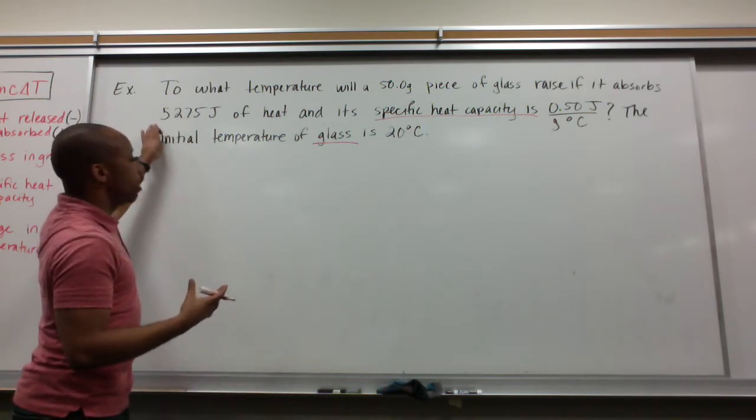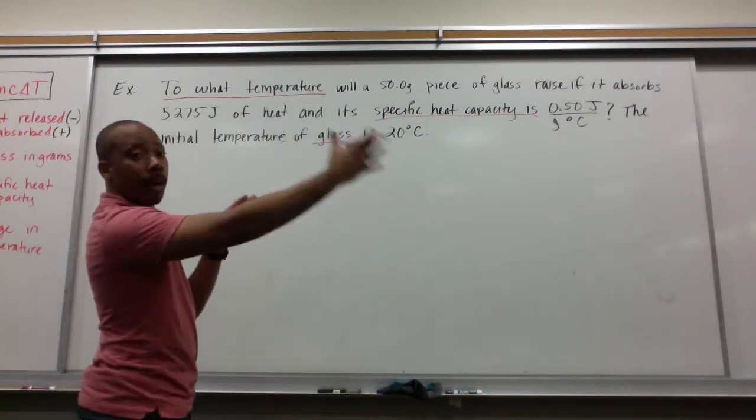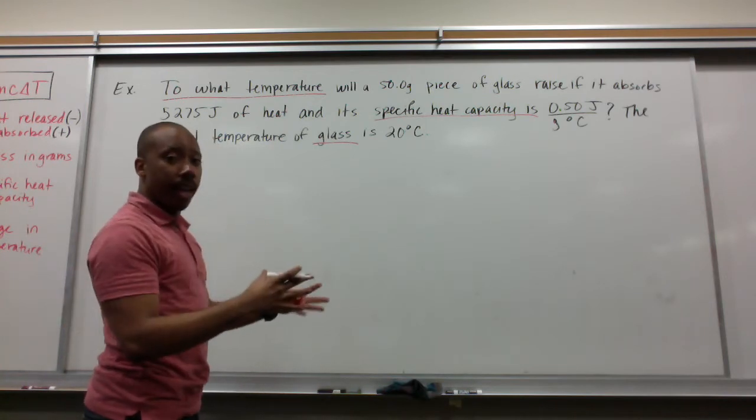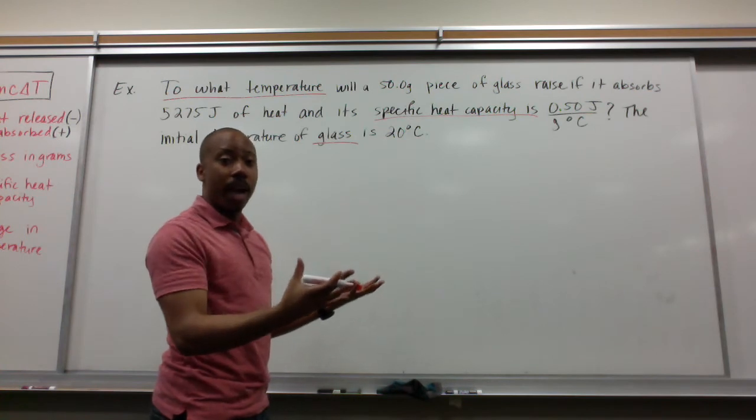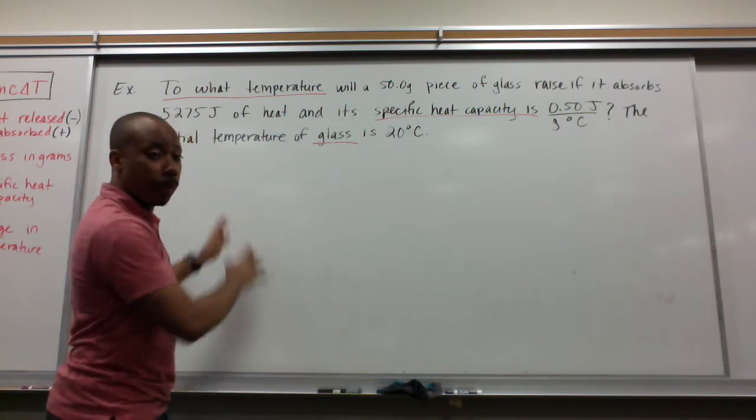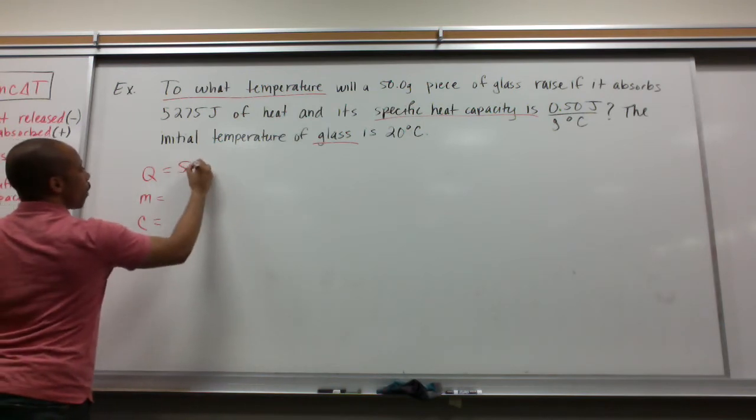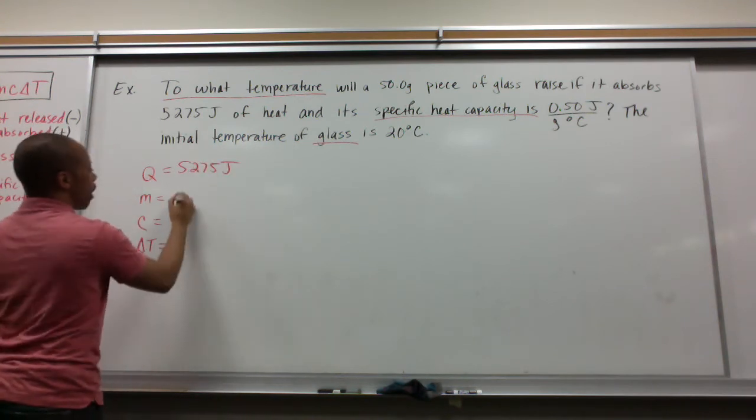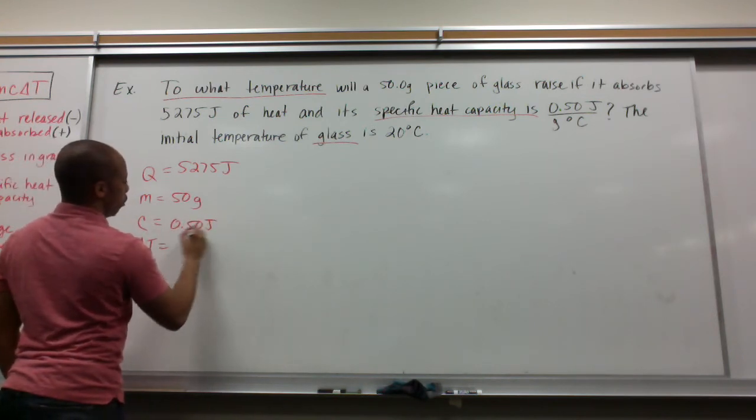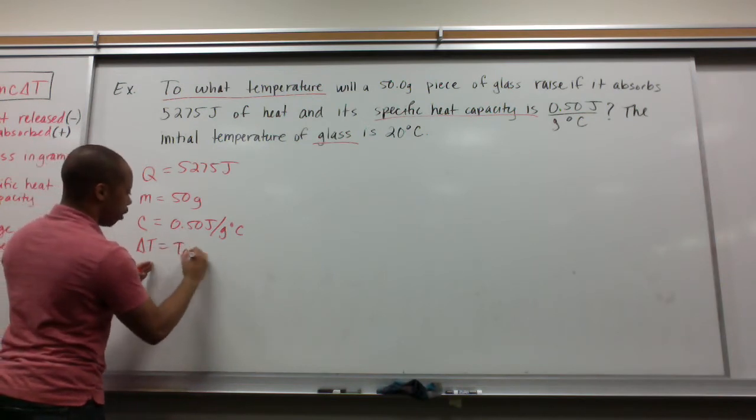Also, we're not being asked to solve for the total heat. We're being asked to solve for to what temperature. So, we're asking for the final temperature. So, after you've added 5,275 joules of energy into this glass and the temperature started at 20 degrees Celsius, what temperature will you be at if the heat capacity is 0.5 joules per gram degree Celsius? We solve it the same way, with the same approach. What's given to us? We know Q is 5,275 joules. The mass of this glass is 50 grams.